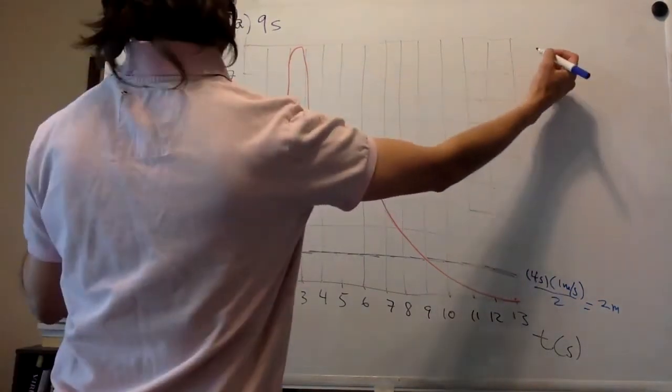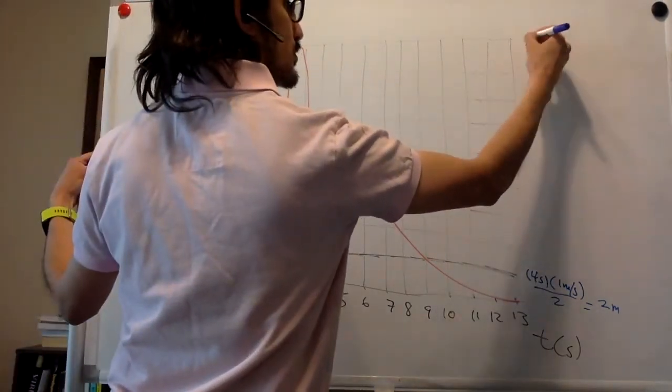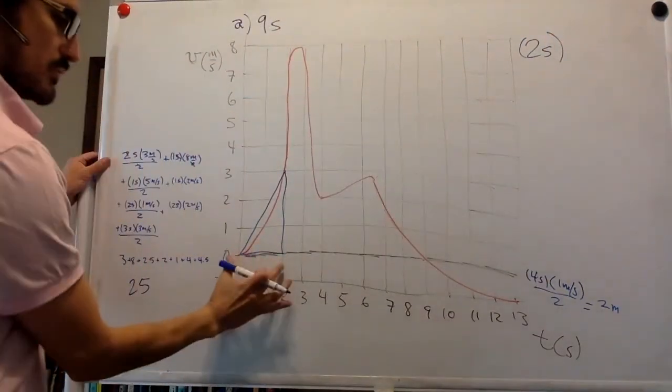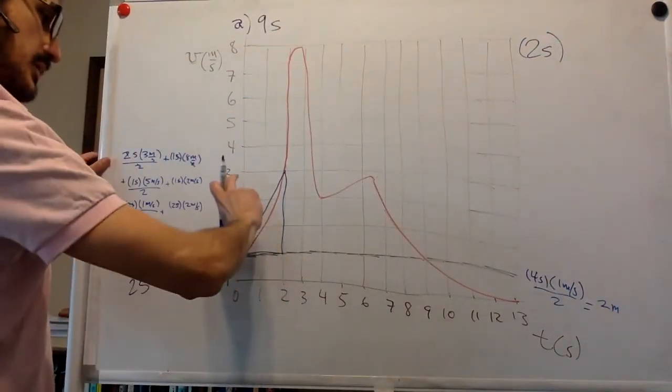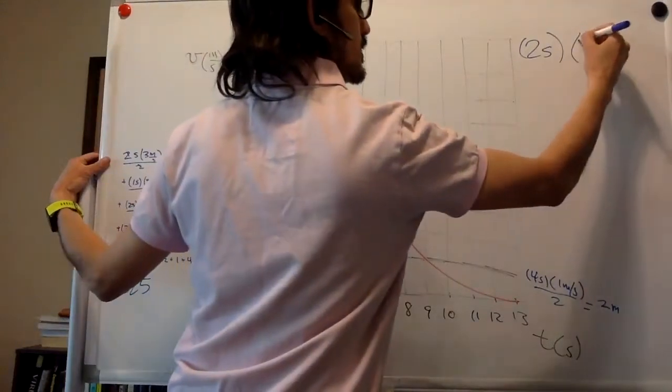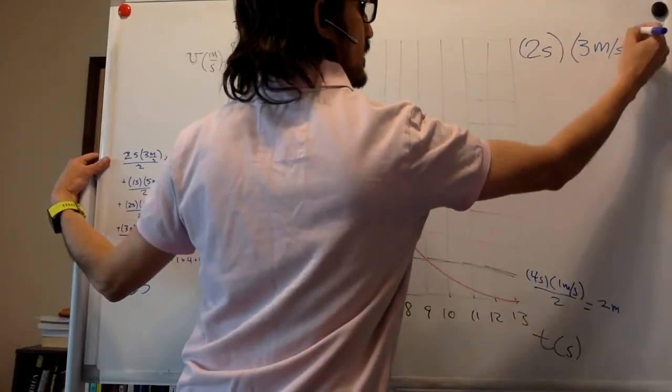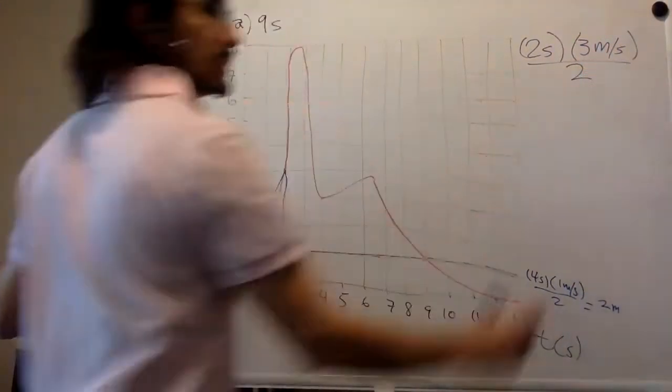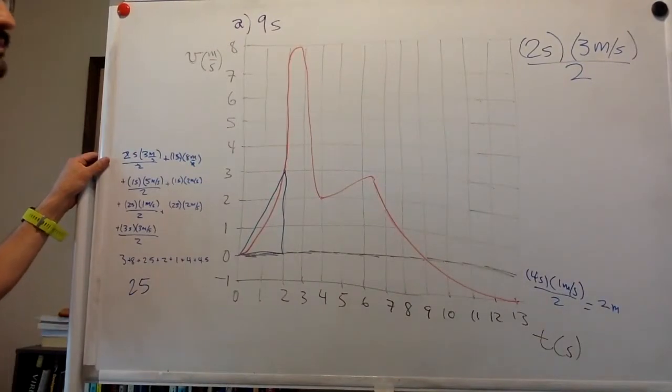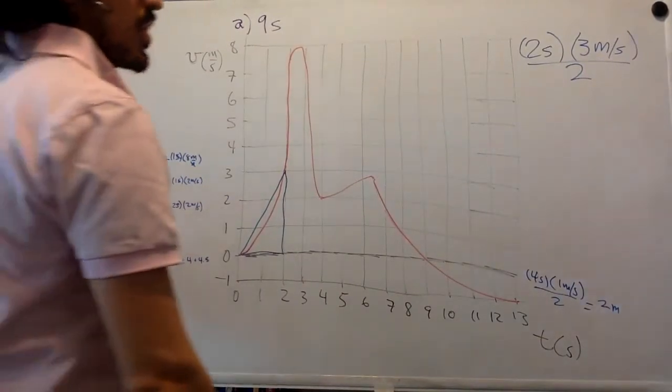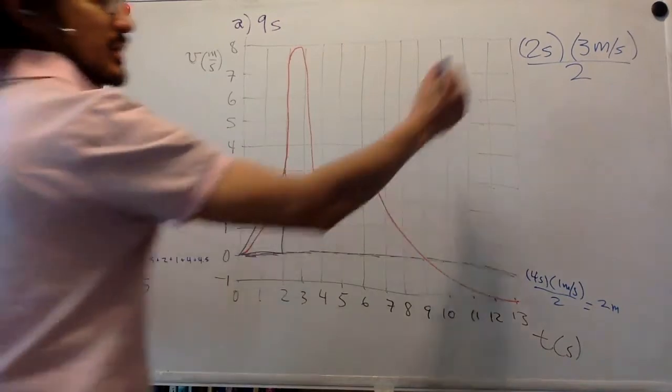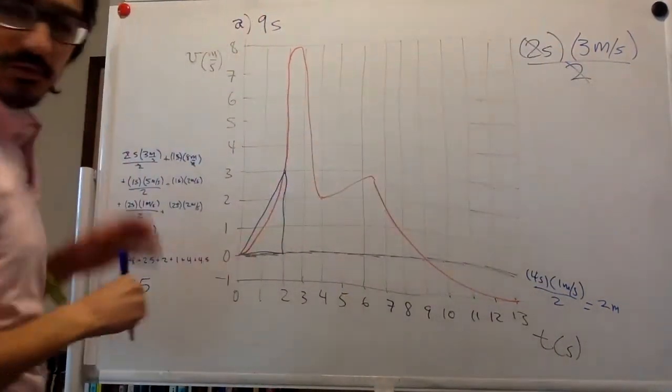The area under the curve is two seconds, this part. And the height is three meters per second. And you divide over two because it is a triangle. So the area is, the area under the curve is three meters.